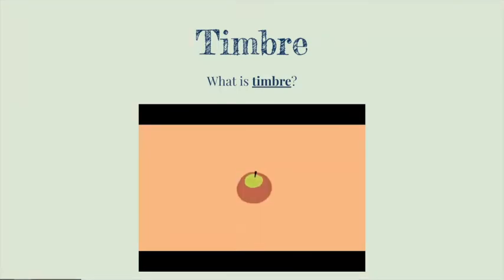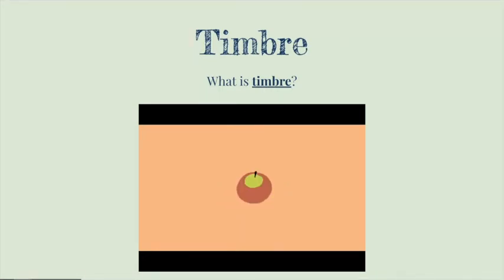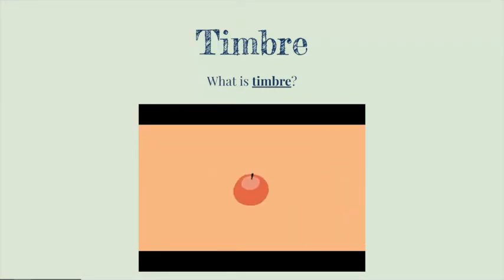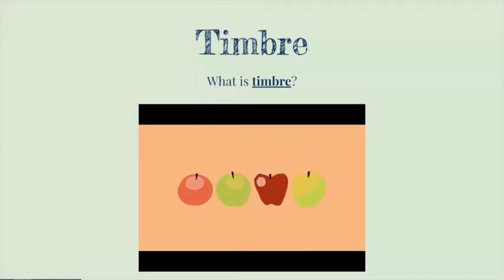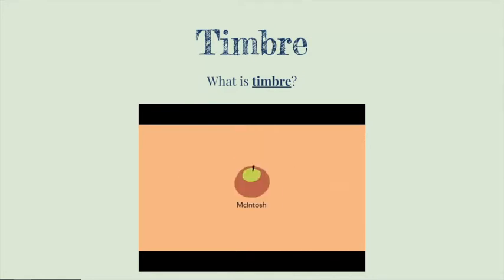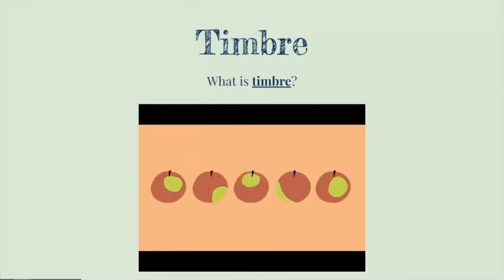Let's correlate timbre to flavor. Think of apples. They're a type of fruit that has a typical shape, color, and flavor. But inside the category of apples, there's a huge amount of variation. Some apples are very sweet, while others are more sour. Some are red, while others are green. They're all still apples, but each one with a distinct characteristic. Red Delicious is different from Macintosh, is different from Gala, is different from Honeycrisp. Even when describing one type, there might be variations from apple to apple.